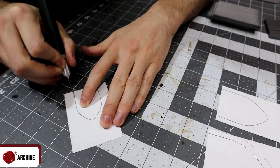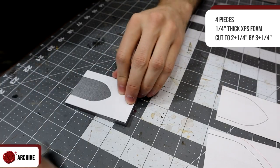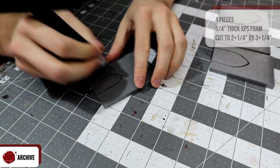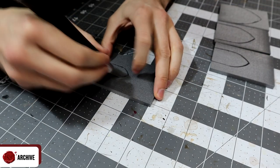To get started with this build grab four pieces of quarter inch thick XPS foam cut down to two and a quarter inches by three and a quarter inches and use the free template you can download from my Patreon in the link below to mark out these arched shapes in each piece and cut them out.